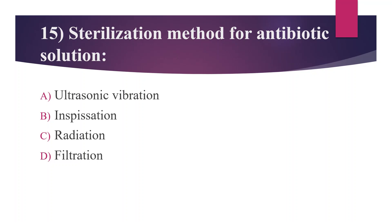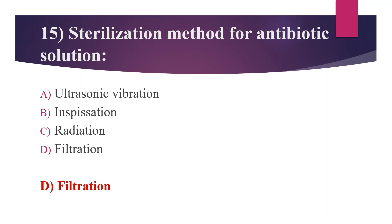Fifteenth question: sterilization method for antibiotic solution. Option A: ultrasonic vibration. Option B: inspissation. Option C: radiation. Option D: filtration. The answer is Option D, filtration. Filtration is the preferred method of sterilizing heat-sensitive liquids and gases without exposure to denaturing heat. Rather than destroying contaminating microorganisms, it simply removes them. It is the method of choice for sterilizing antibiotic solutions, toxic chemicals, radioisotopes, vaccines, and carbohydrates, which are all heat sensitive. Thank you.